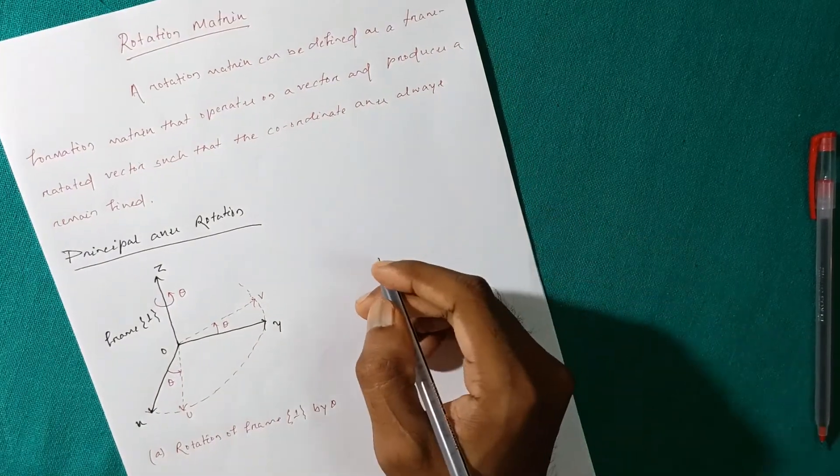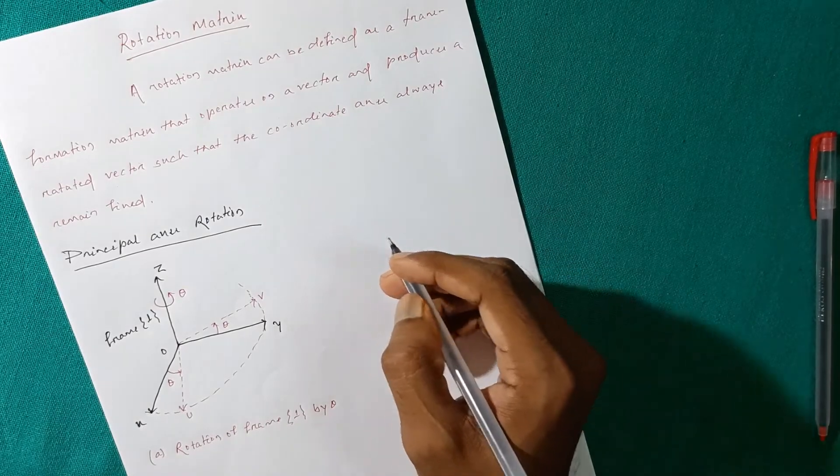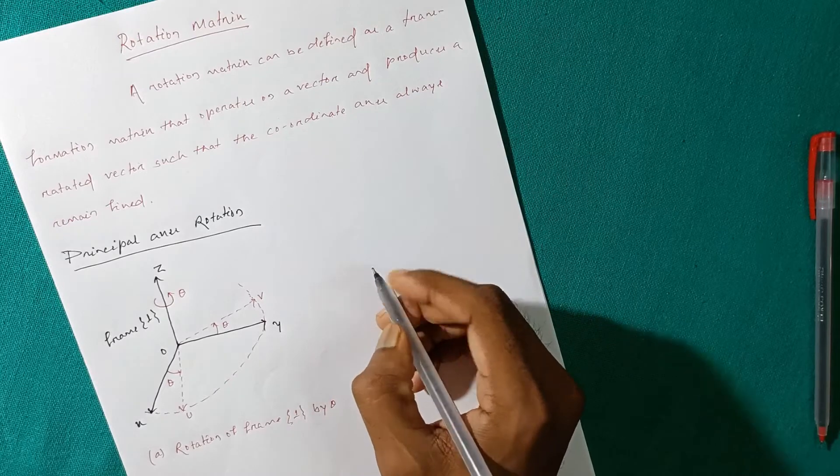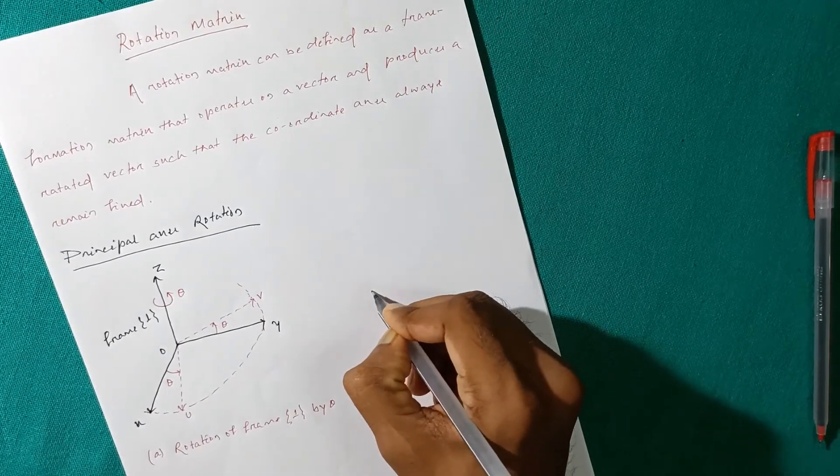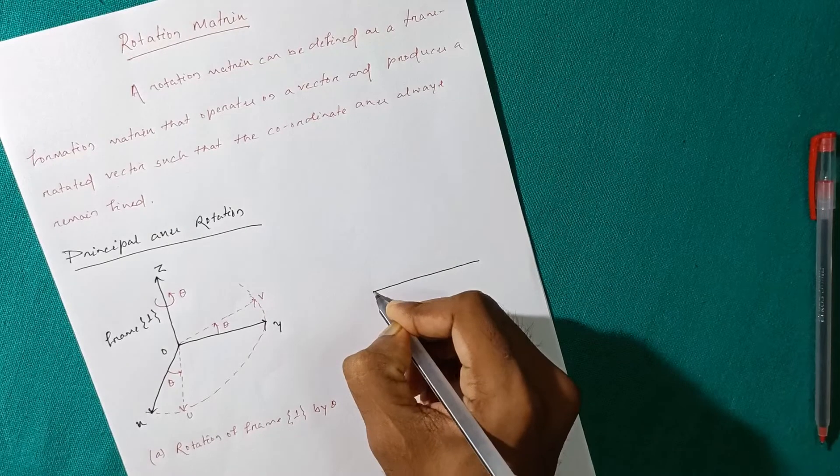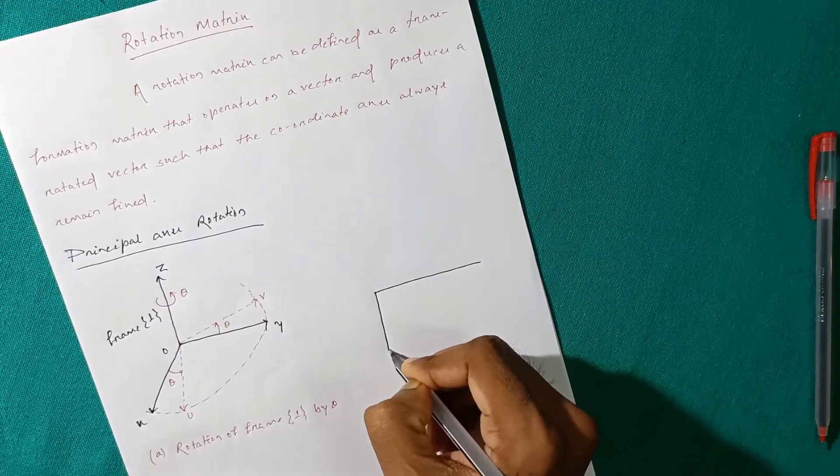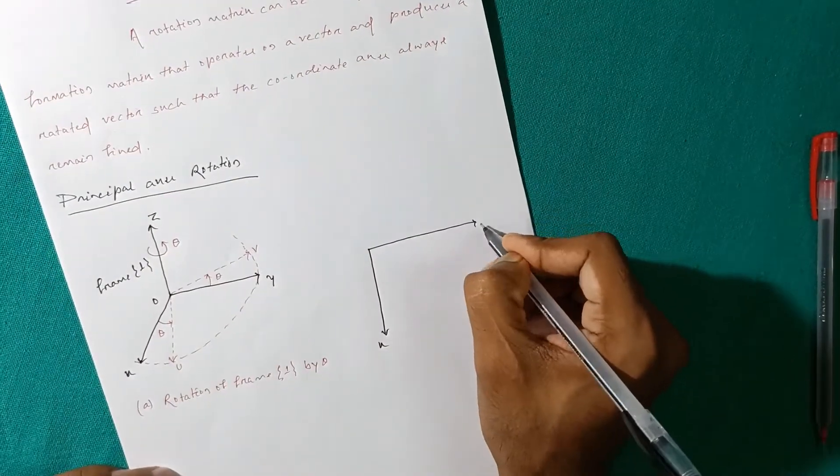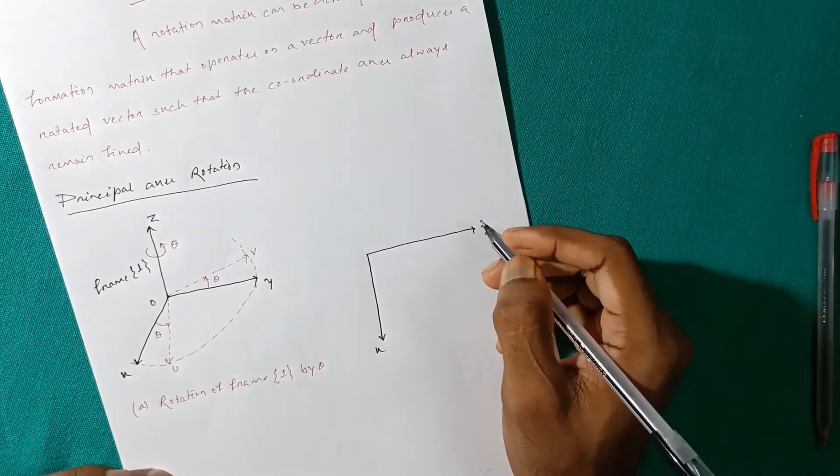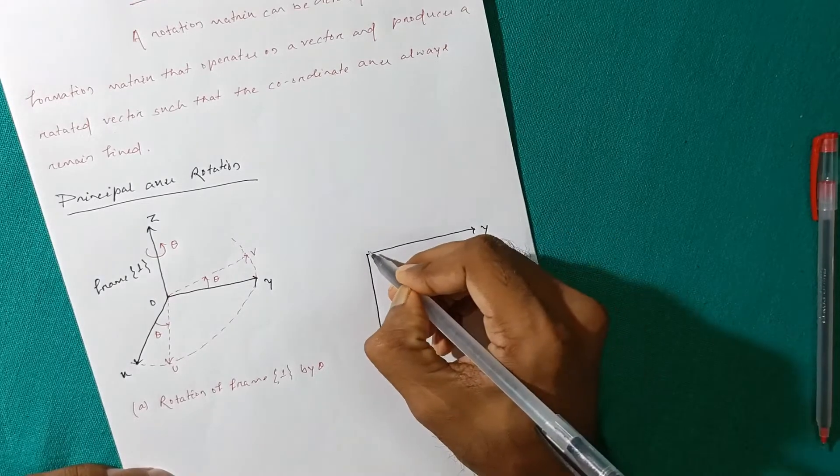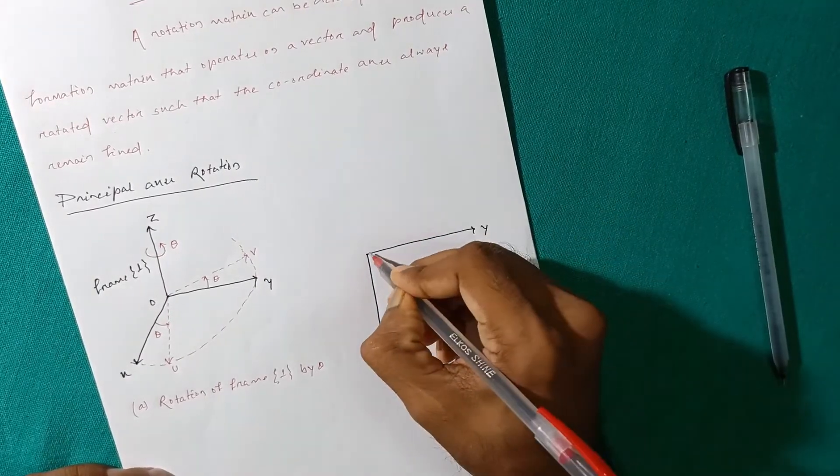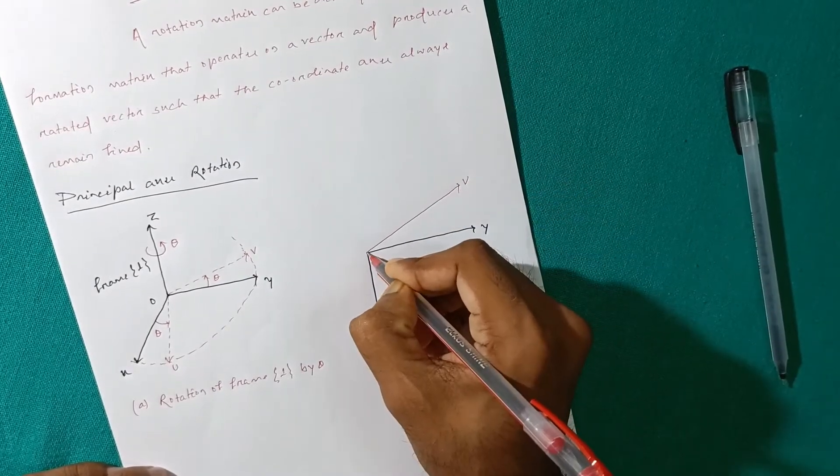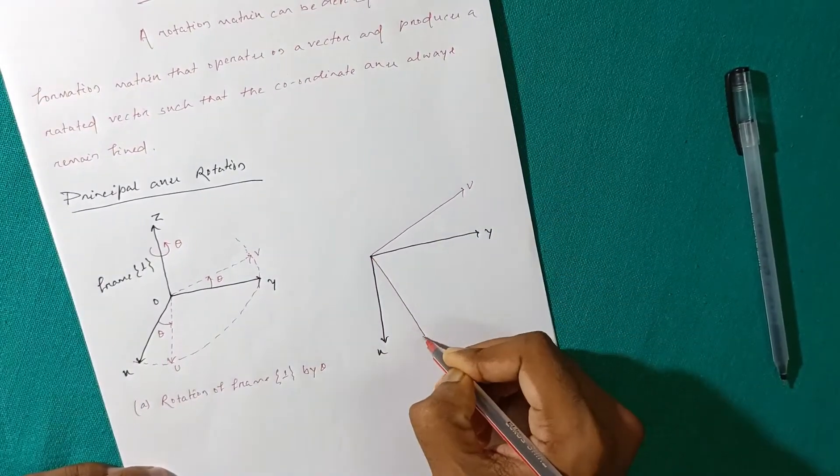By removing Z, you can just neglect it as the only considered thing is X and Y axis. So here you can see this is Y axis and this is X axis.